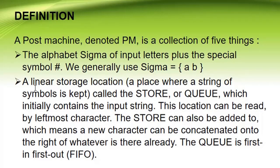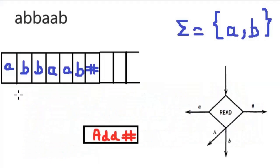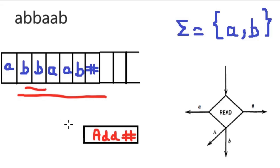The second thing is a linear storage location called the store or queue. The Post Machine queue is a data structure which initially contains the input string. The string we want to test is stored in this queue. We assume that at the start, the input string is loaded into the queue.